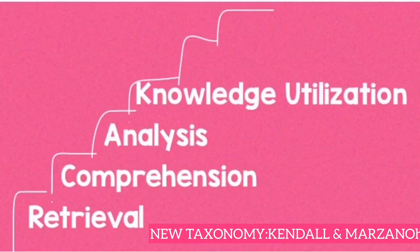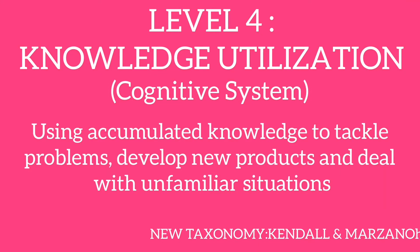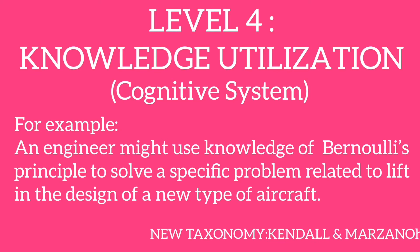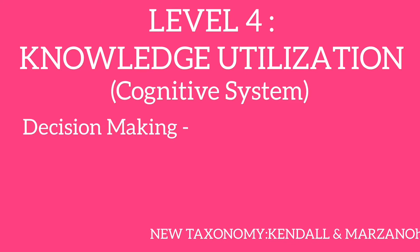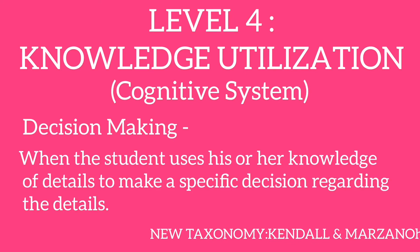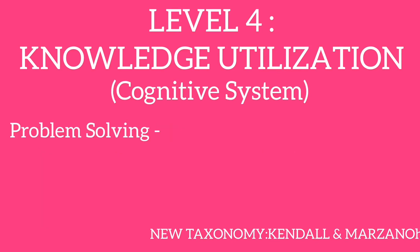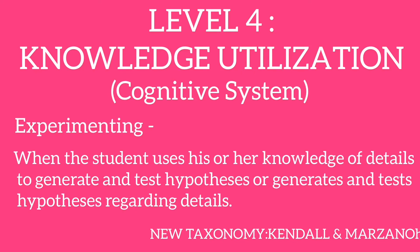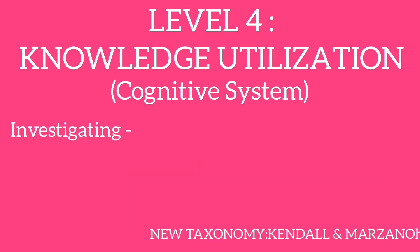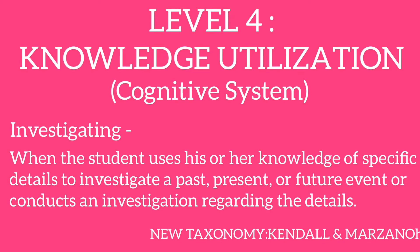The last process for the cognitive system is knowledge utilization. It's about using accumulated knowledge to tackle problems, develop new products, and deal with unfamiliar situations. For example, an engineer might use knowledge of Bernoulli's principle to solve a specific problem related to lift in the design of a new type of aircraft. There are four general categories: decision making, where the student uses knowledge of details to make a specific decision; problem solving, where the student uses knowledge of details to solve a specific problem; experimenting, where the student uses knowledge of details to generate and test hypotheses; and investigating, where the student uses knowledge of specific details to investigate a past, present, or future event.